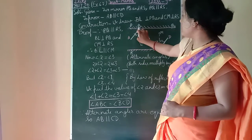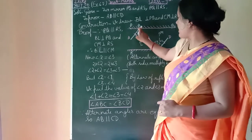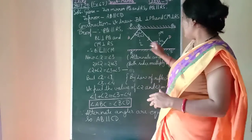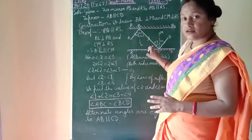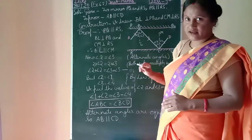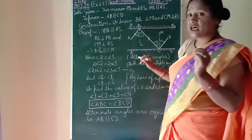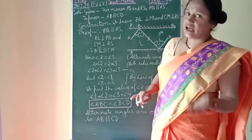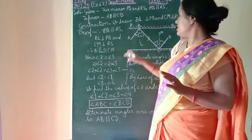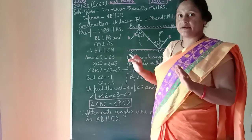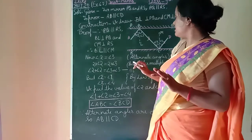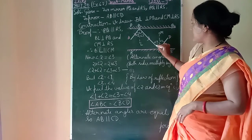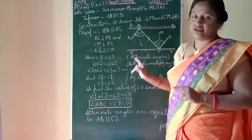So we are given two parallel mirrors PQ and RS. The incident ray AB reflects to BC at mirror PQ, and BC reflects to CD at mirror RS. The law of reflection — which you learn in physics — states that when we draw a perpendicular to a mirror, the angle of incidence equals the angle of reflection.